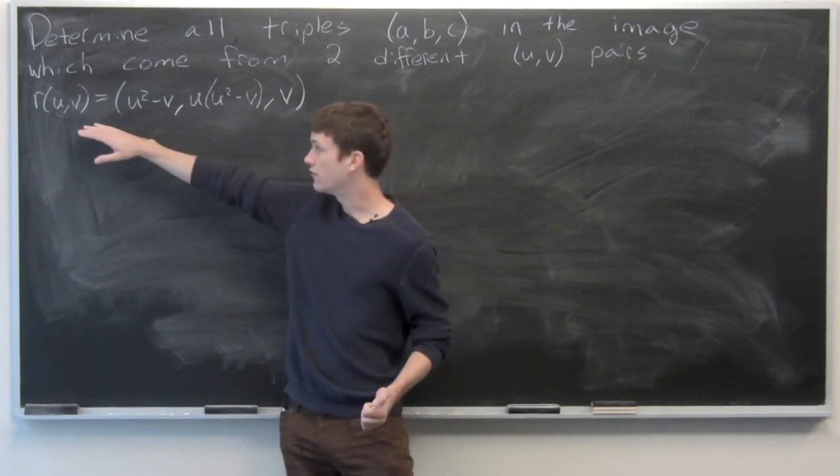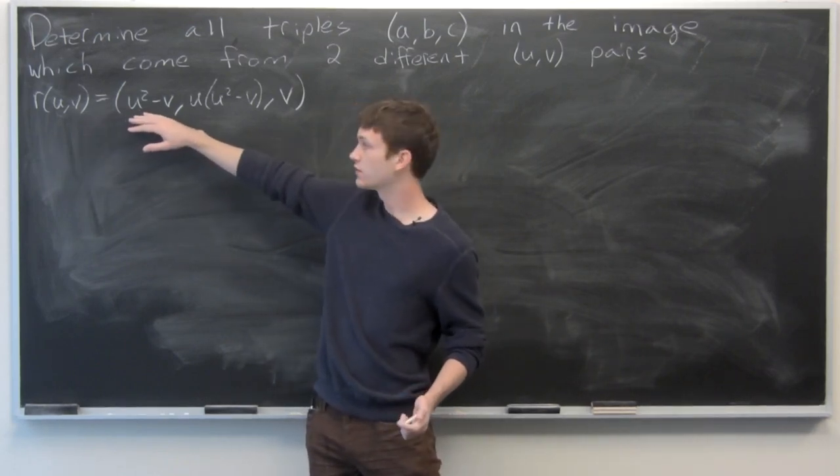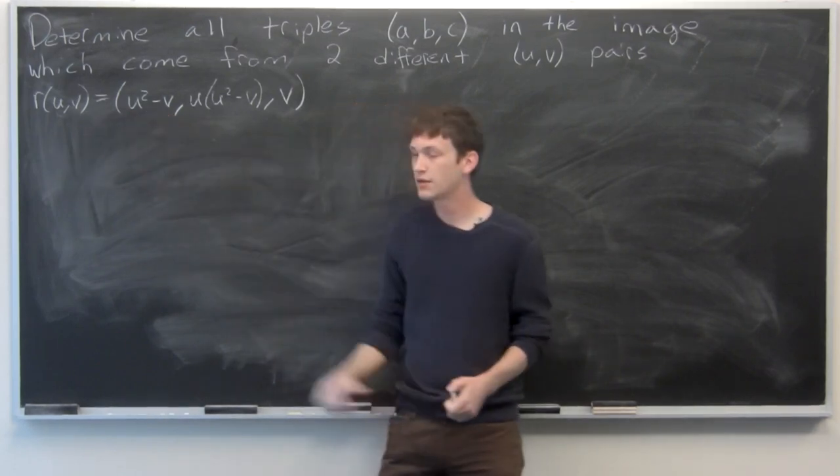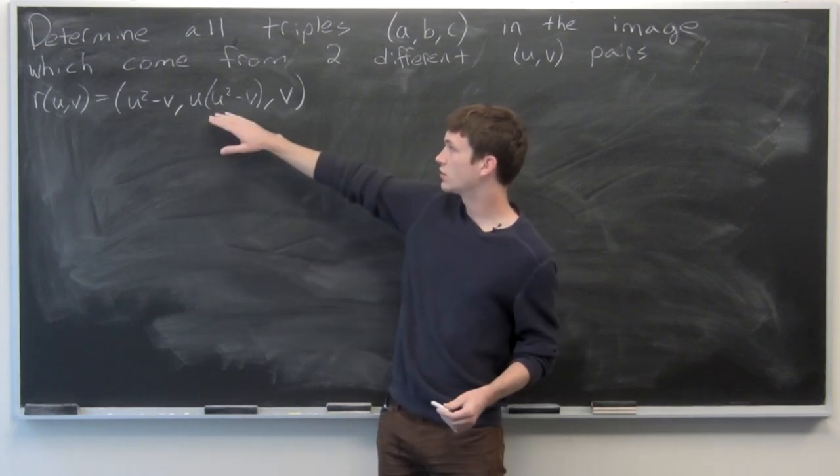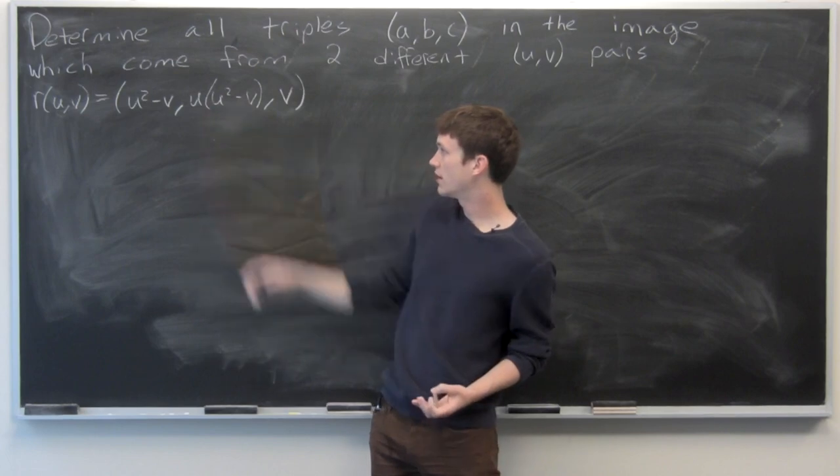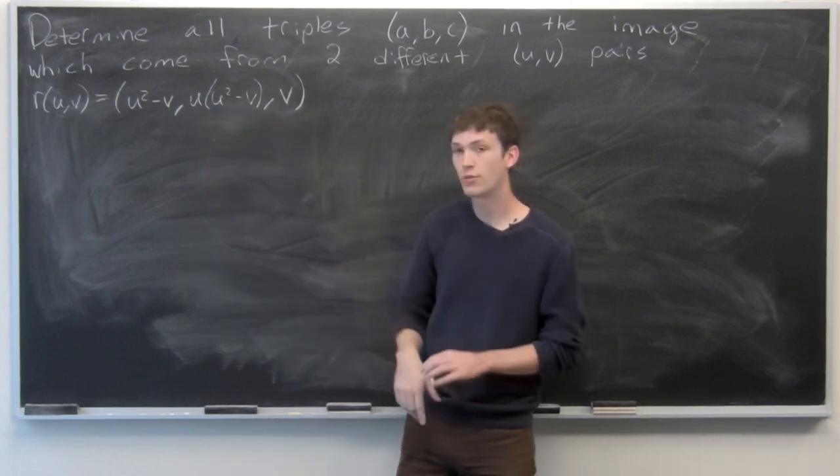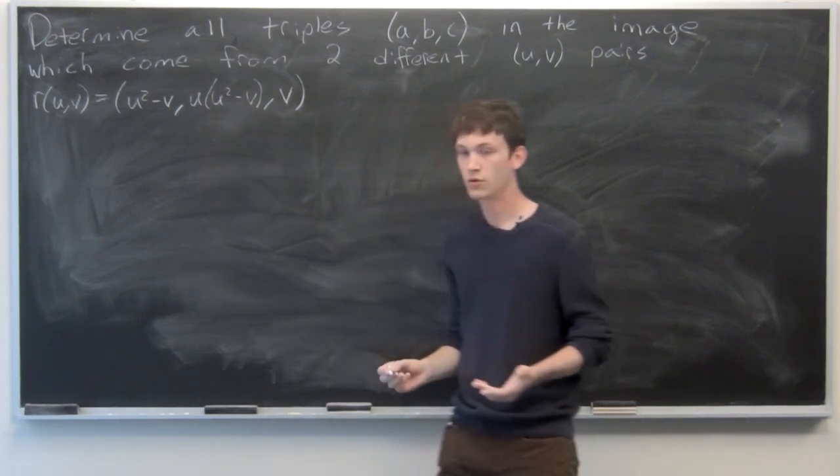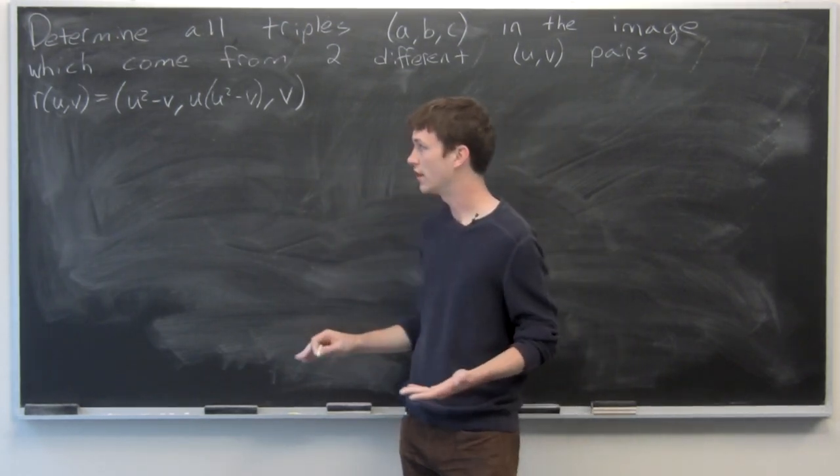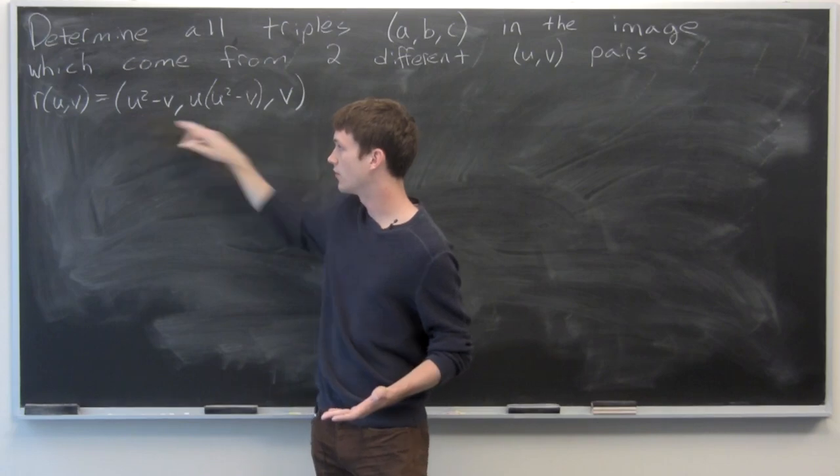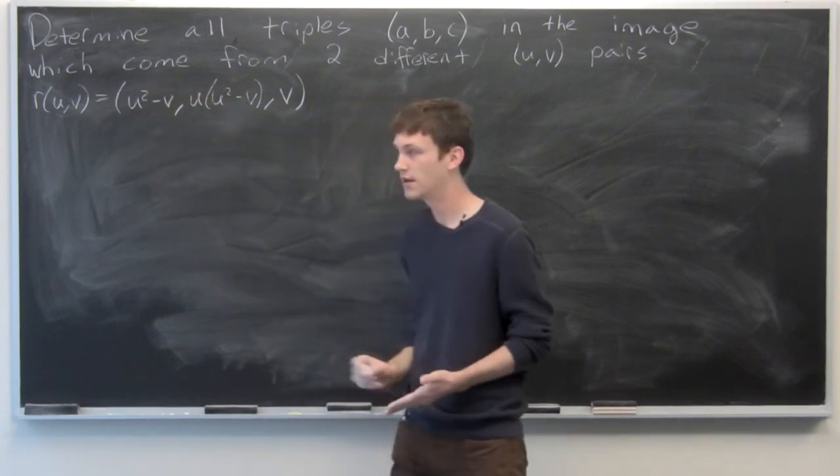We're given that r of u-v is defined as: first component u squared minus v, second component u times the quantity u squared minus v, and third component v. So we want to find two different u-v pairs such that the image is the same.